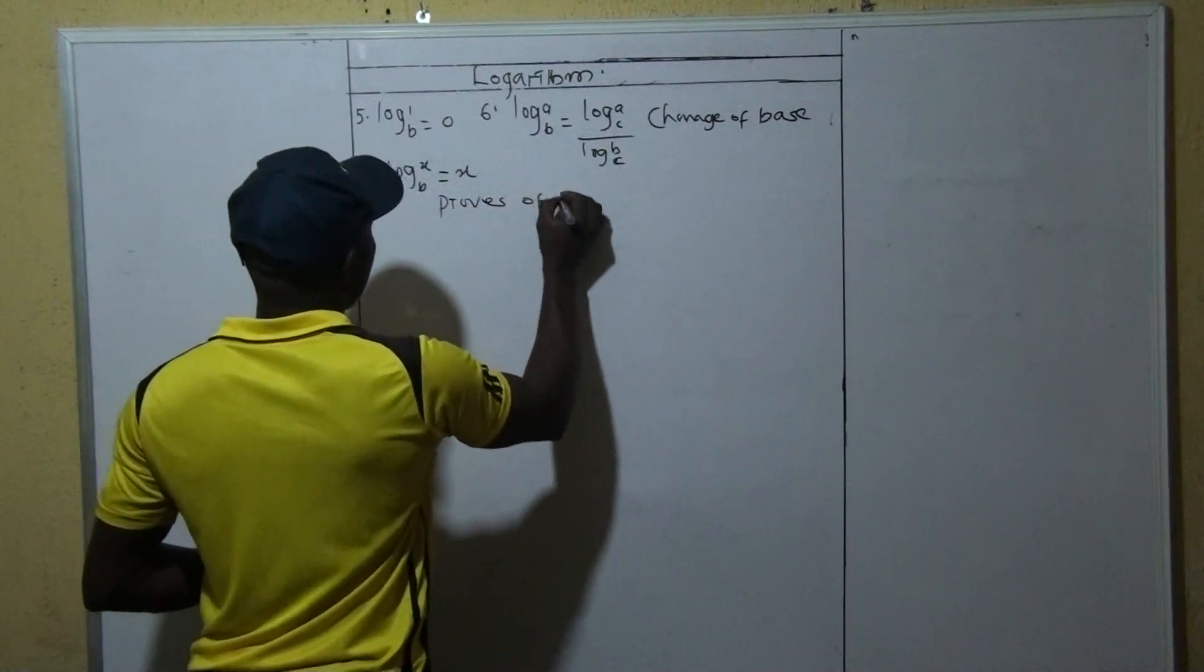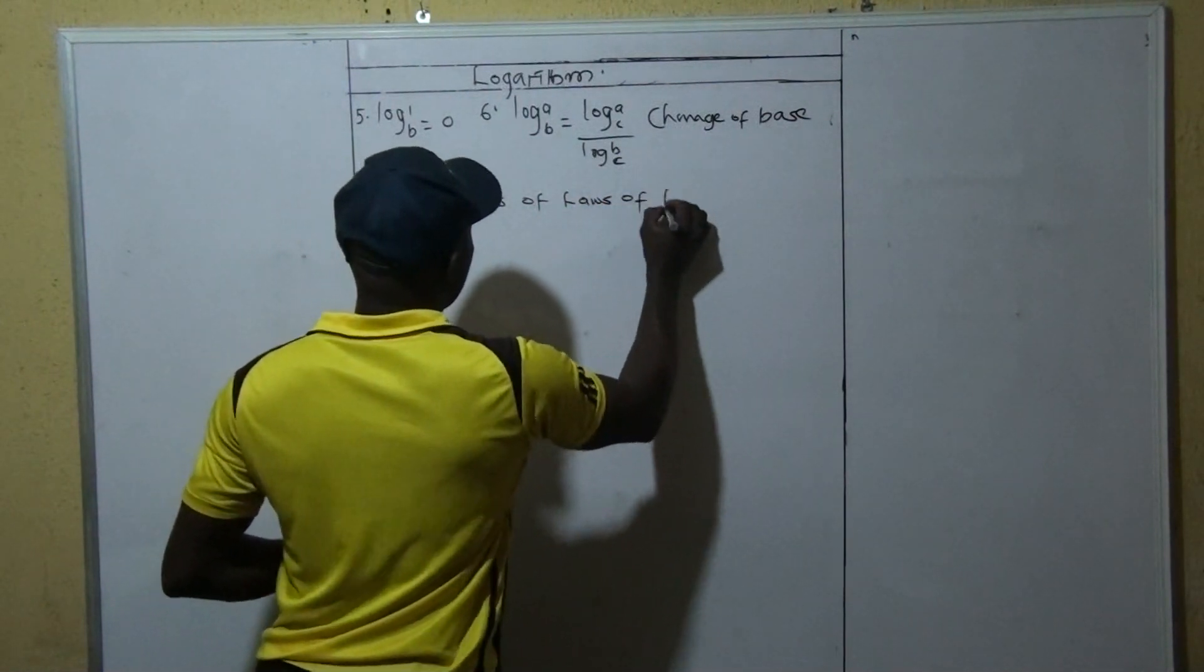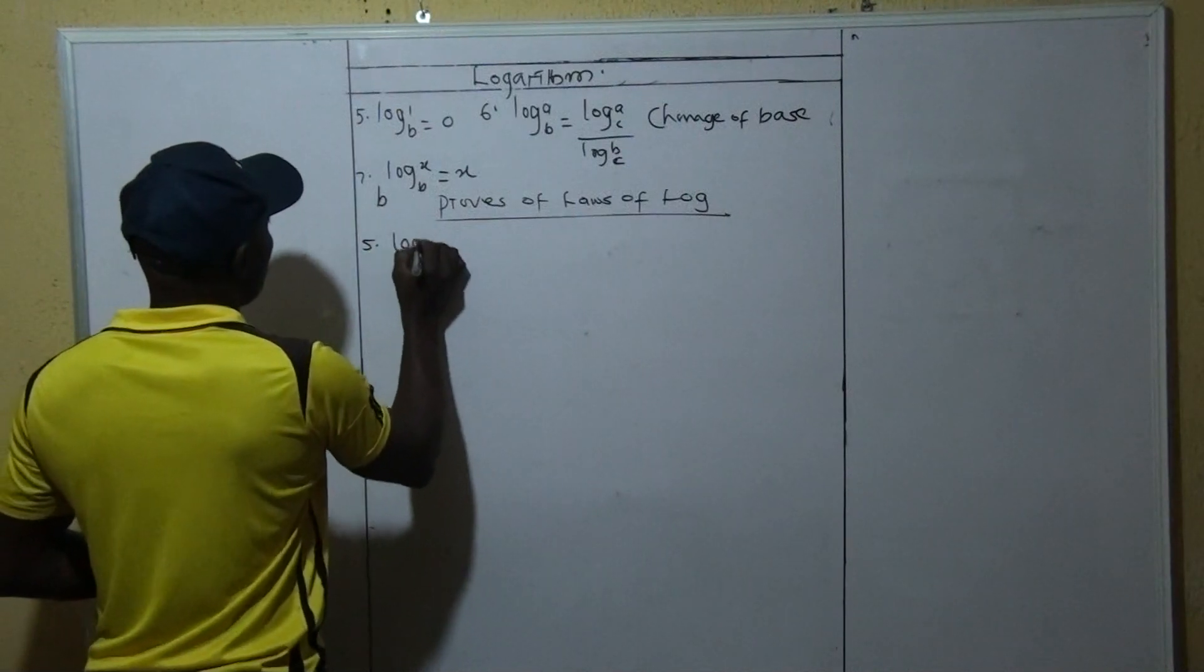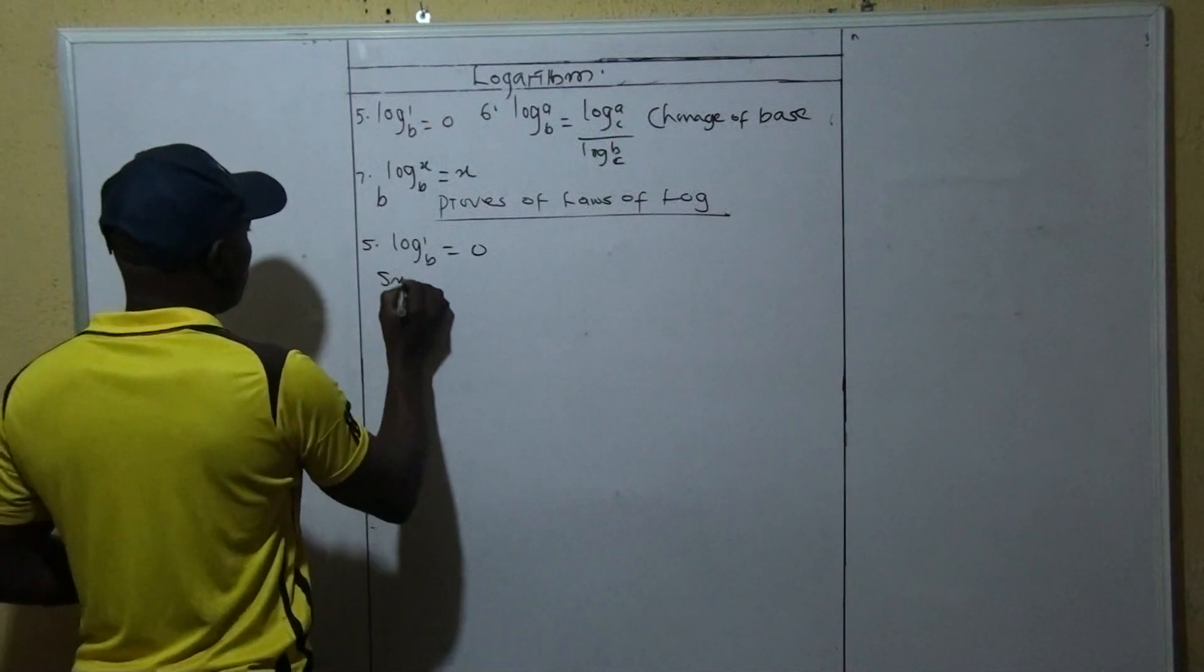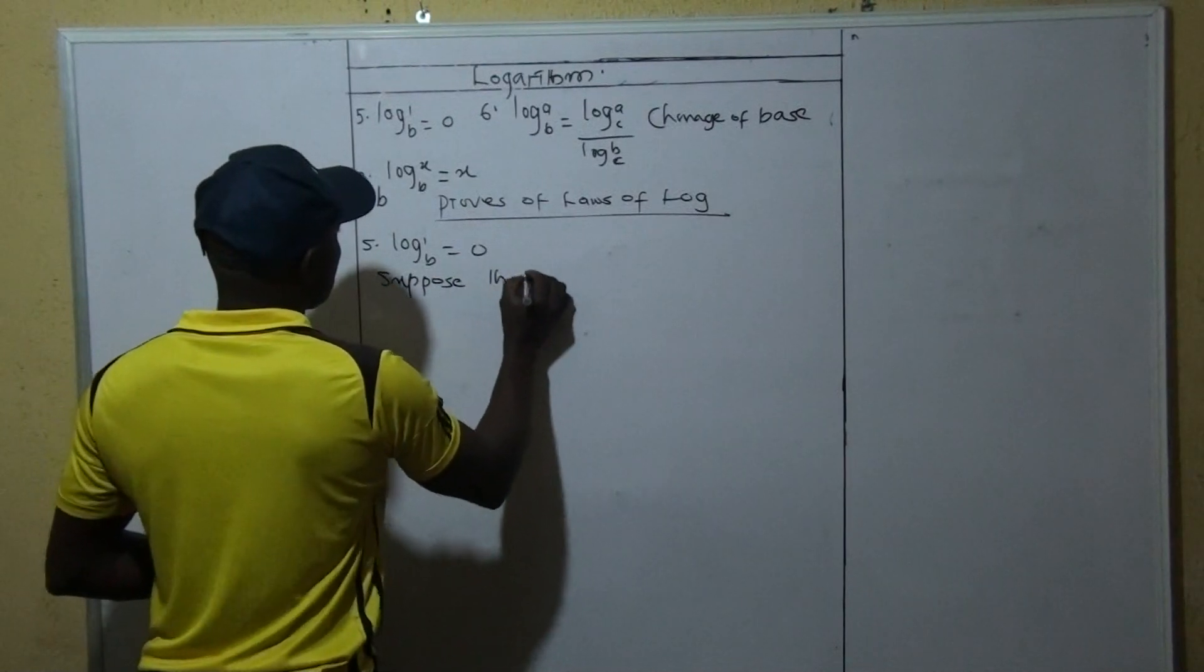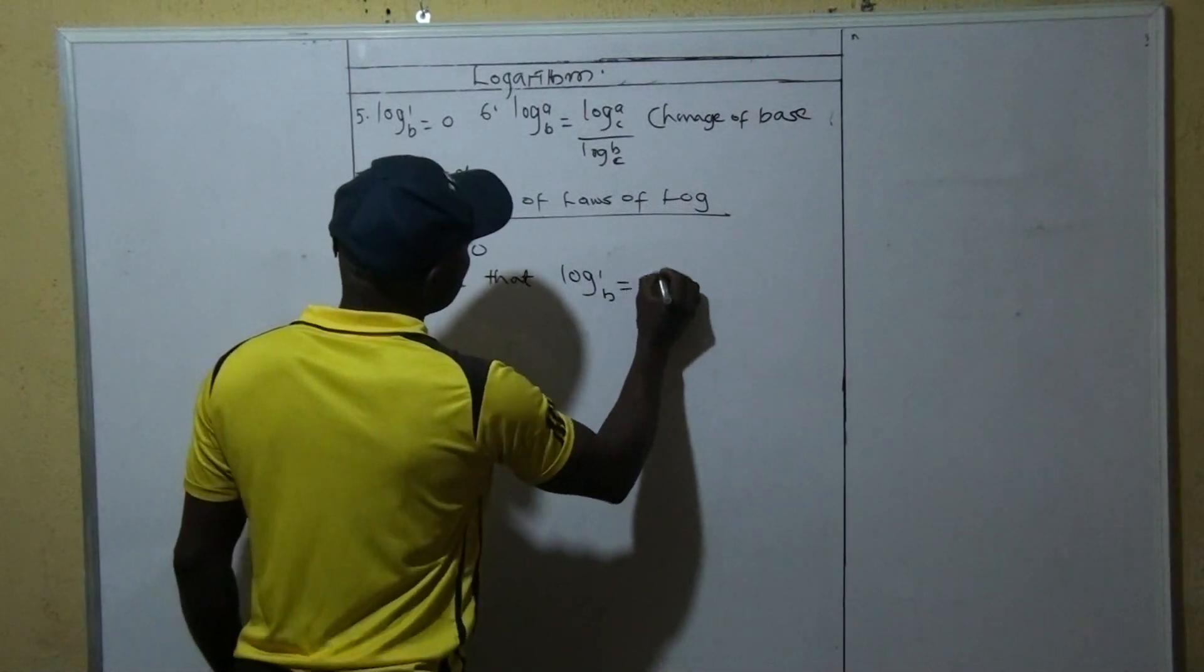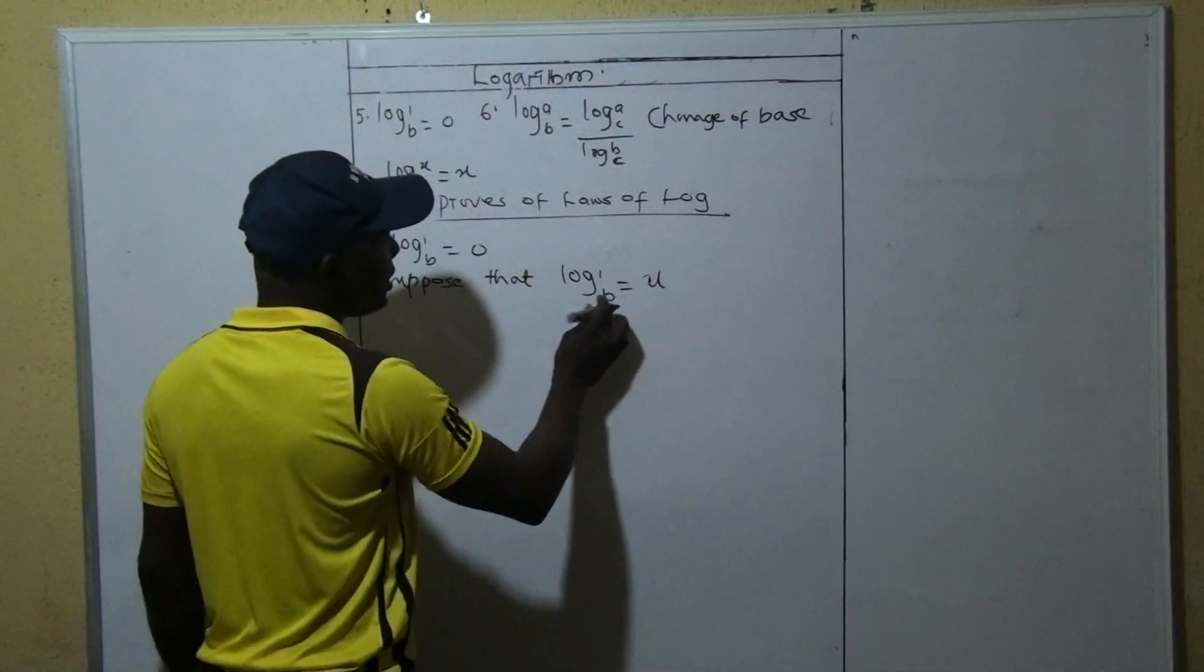So we're starting with the proofs. Proof of the fifth one: we're going to look at log 1 to base B is equal to 0. So we say suppose we suppose that log 1 to base B is equal to U, like our assumption.